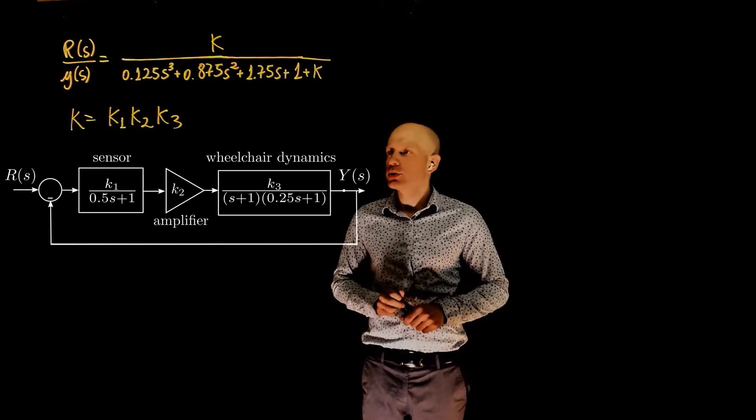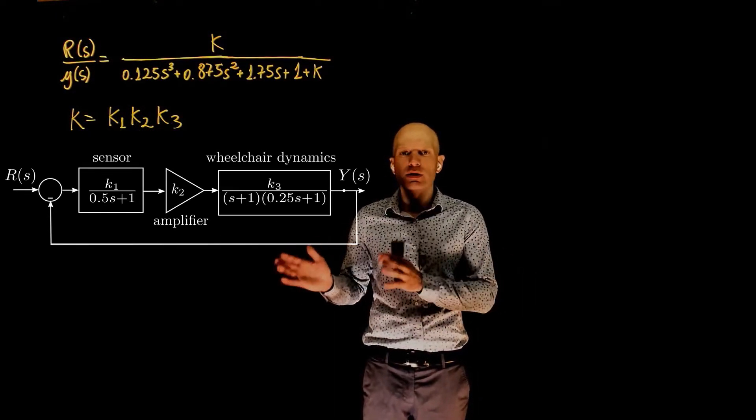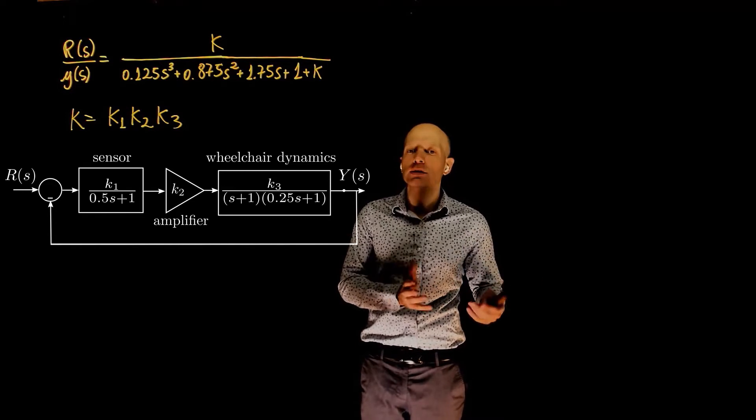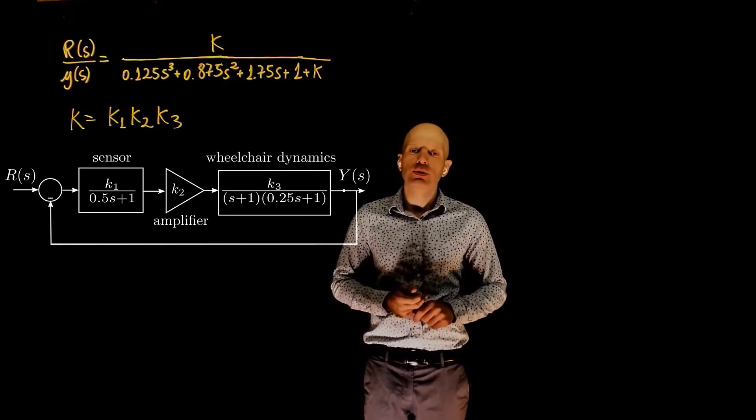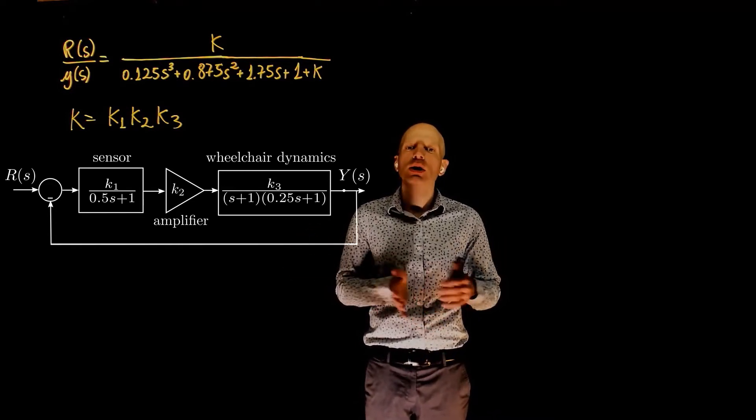In this example, we have another control system with three main parts. The first is the sensor, the amplifier, and the plant, and each component of this control system has a gain, k1, k2, and k3.